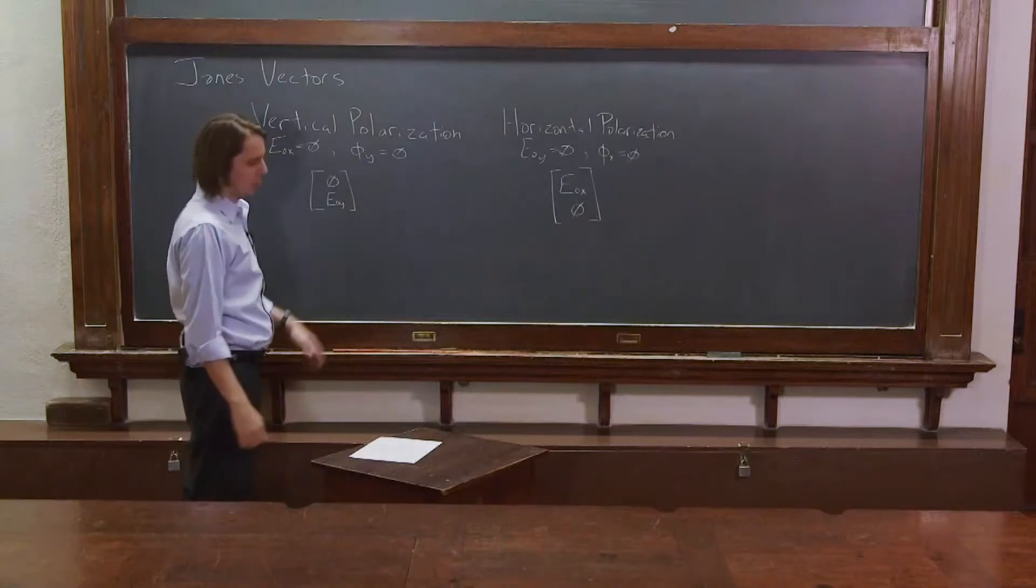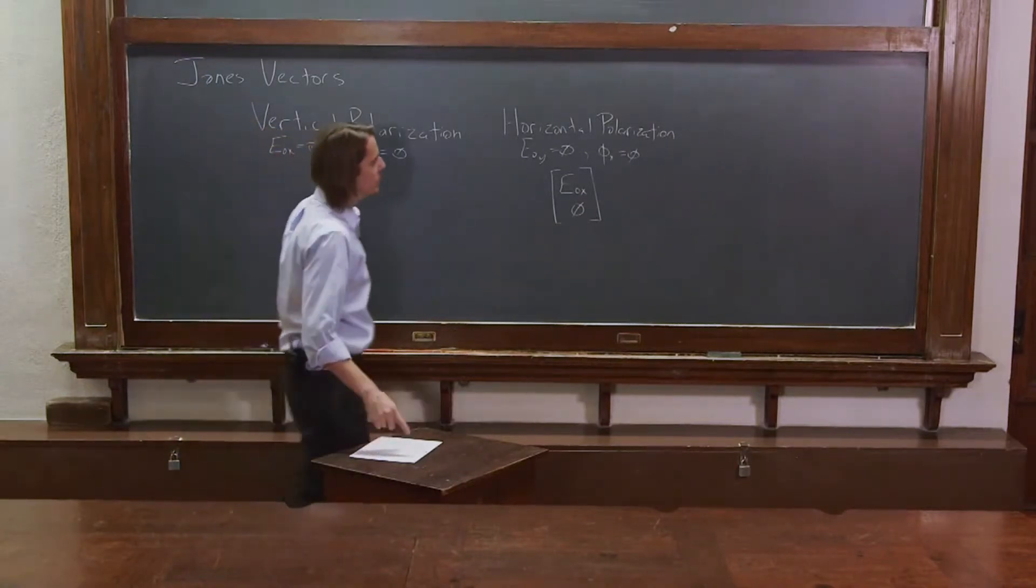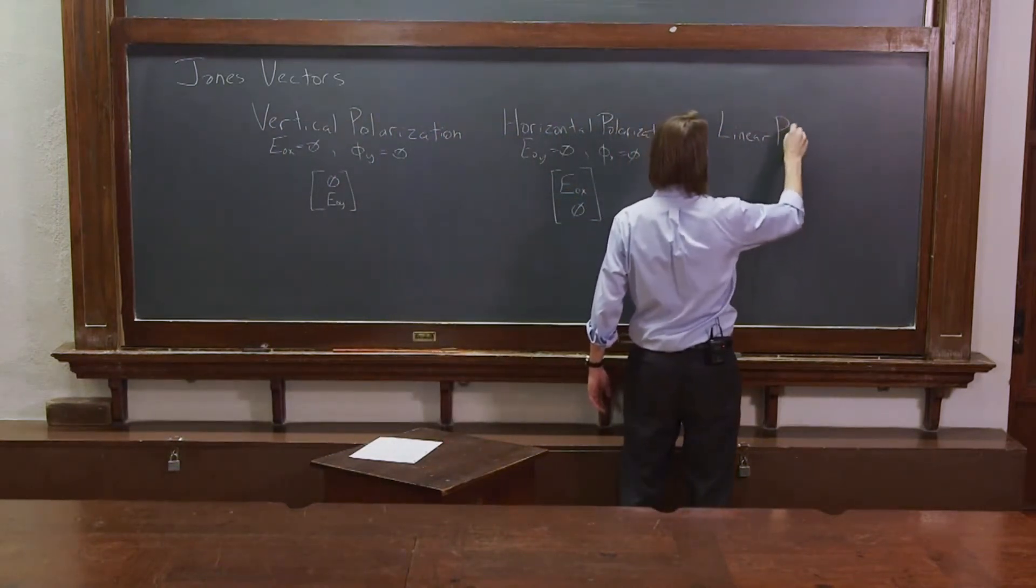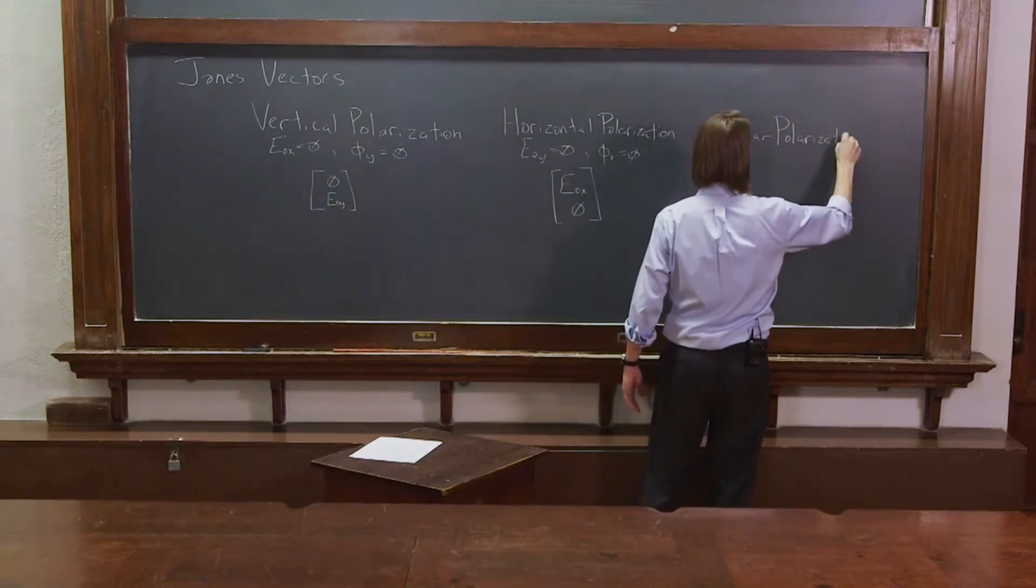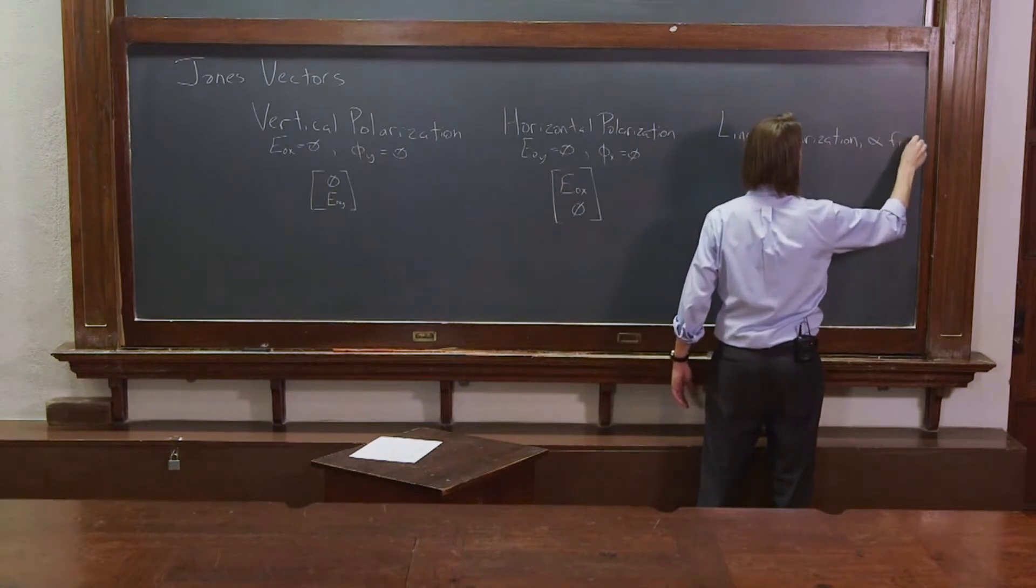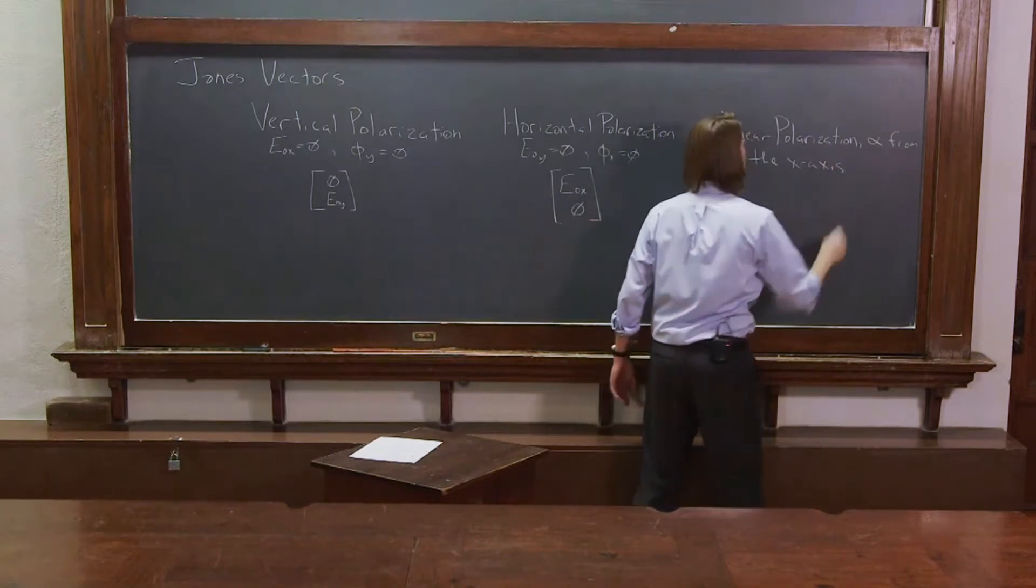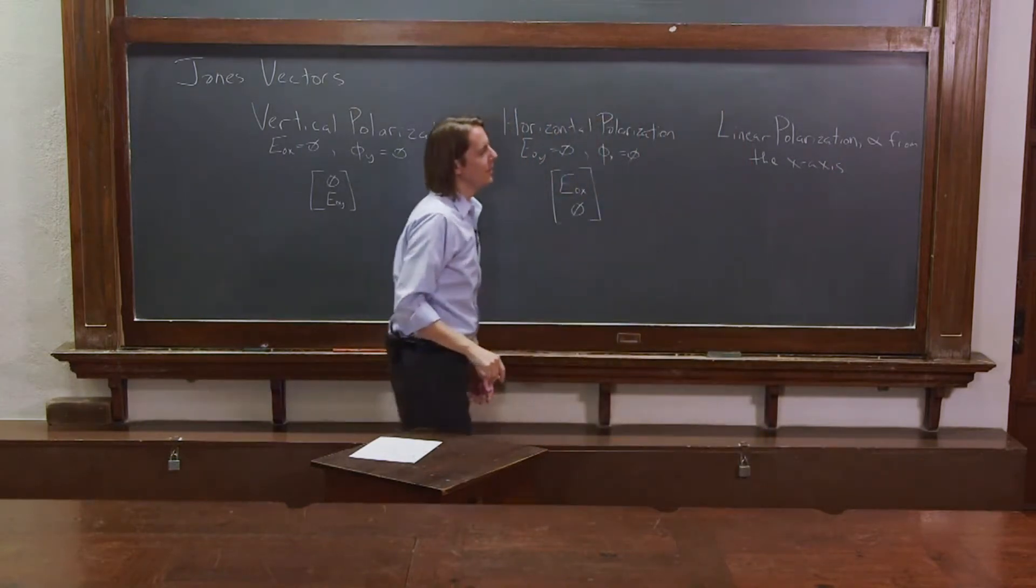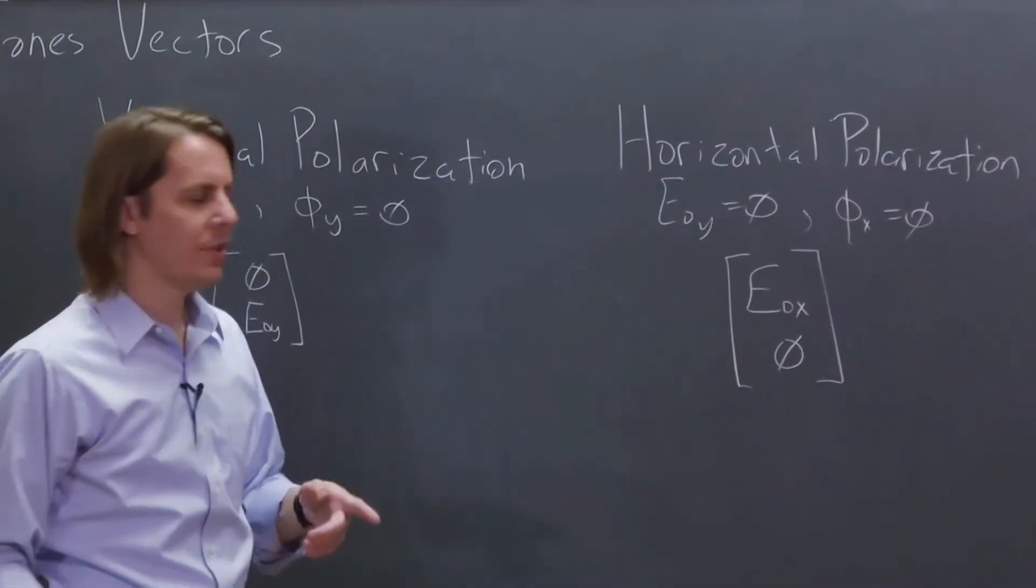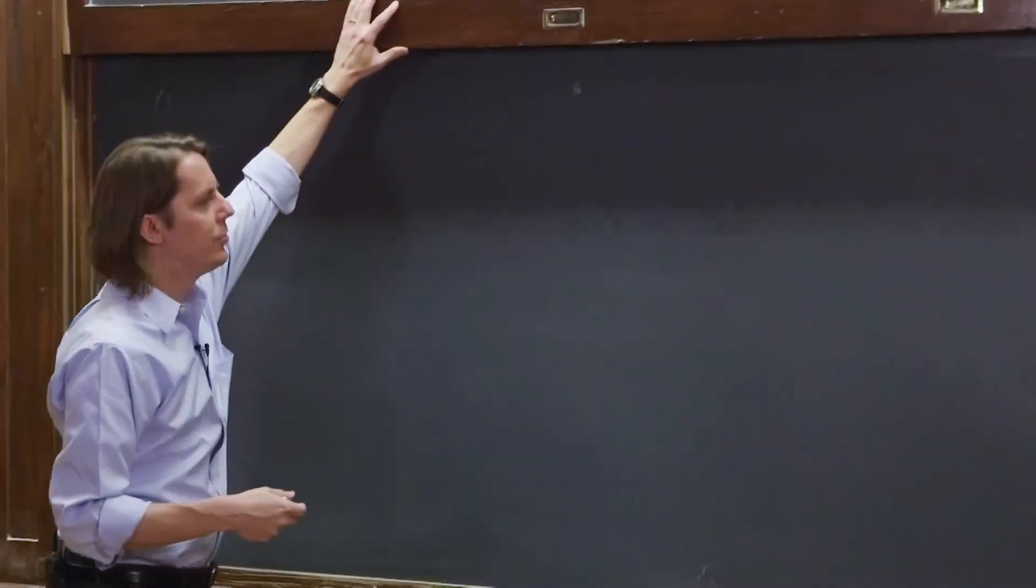So those are the two what we call linear polarizations, horizontal and vertical. We could also do just an arbitrary linear polarization. And we could say it's alpha, that's an angle, from the x-axis. Now, this is going to need both E not x and E not y. But we actually want to still set the phases equal to zero. And let me show you why. Let me bring back that illustration again.